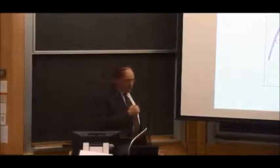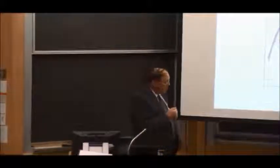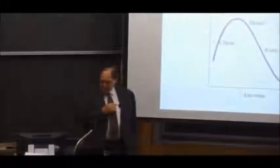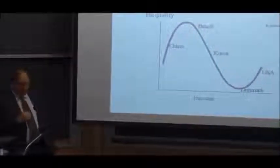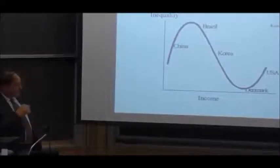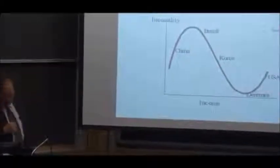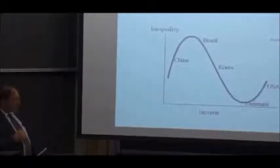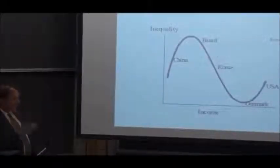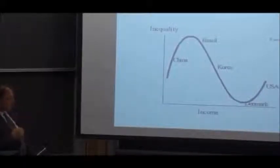But as countries move over toward being primarily urban, primarily industrial, other forces come to dominate mainly because the agricultural sector is no longer so large a part of the population. Kuznets saw that the normal course of events would be one in which you have declining inequality as industrialization deepened, trade unions arose, and in general as the gap between the city and countryside became less significant.